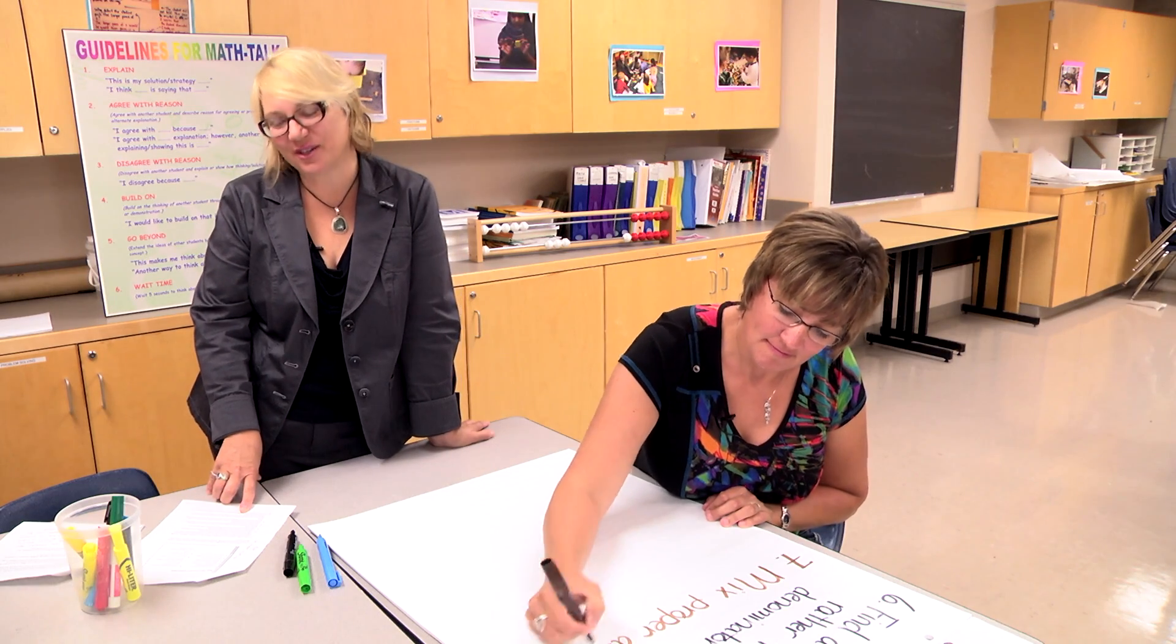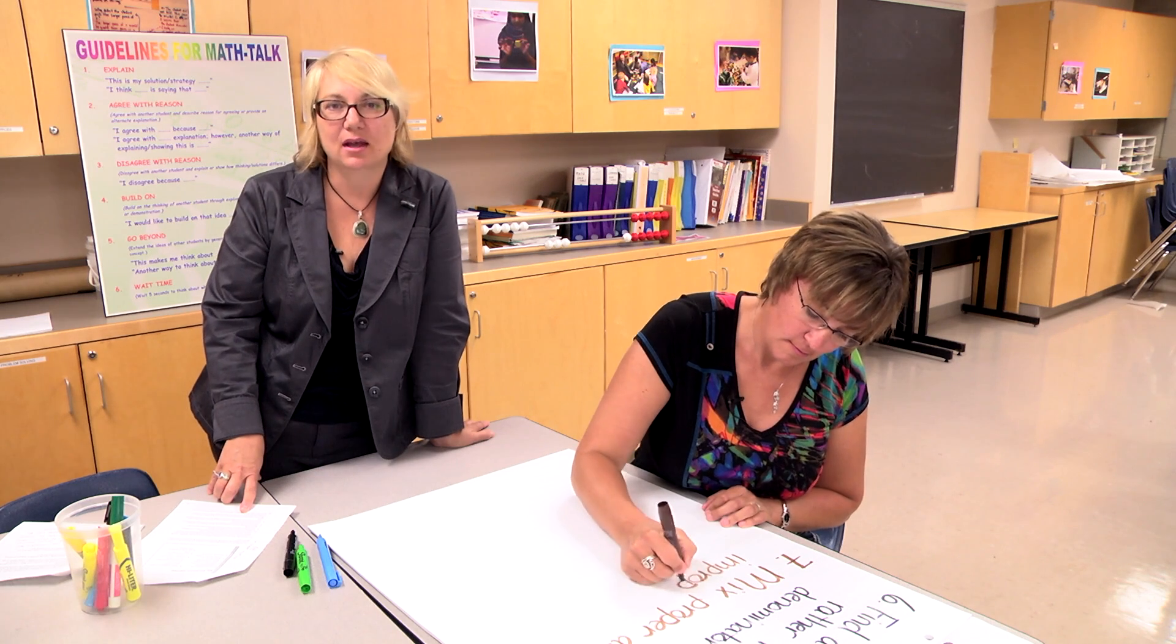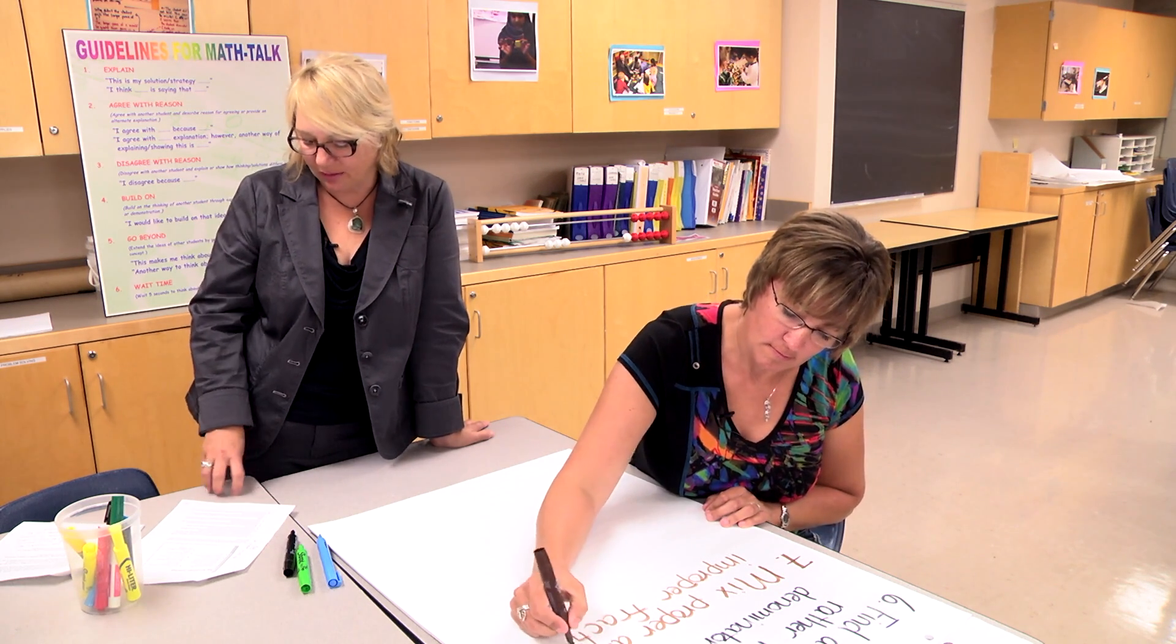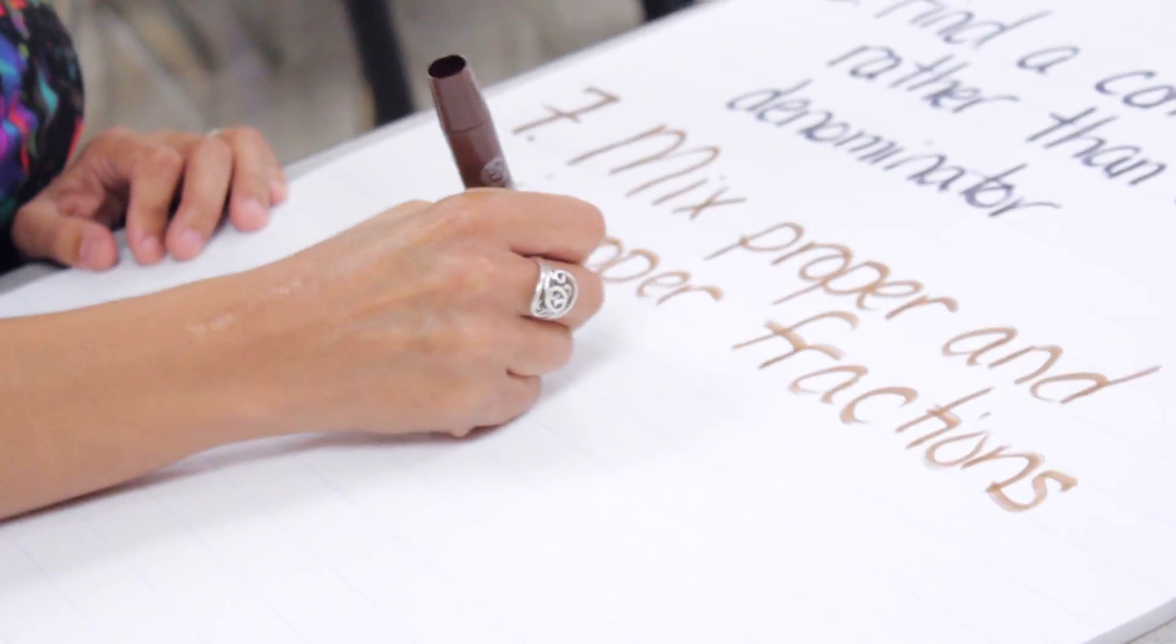The seventh lesson learned is to mix proper and improper fractions in tasks because it reinforces that a fraction is a number and allows students to connect to their understanding of other numbers including whole numbers.